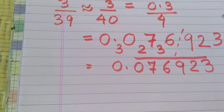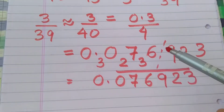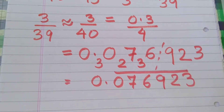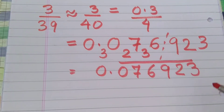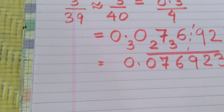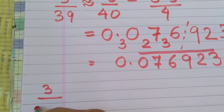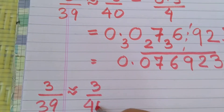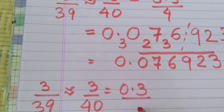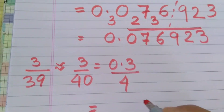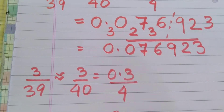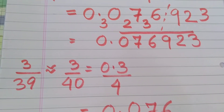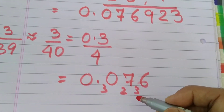Now every time we may not get D minus N equal to the number while dividing, so I will also show you how to do it completely. So let's do it again: 3 by 39 becomes 3 by 40, which becomes 0.3 by 4. We copy as it is till 0.07, 6. This gives remainder 3, 2, and 3, so this becomes 36.